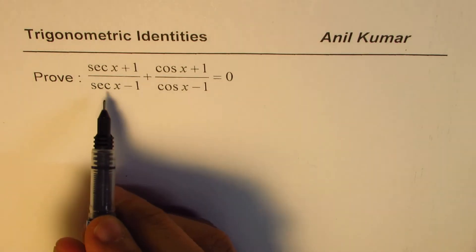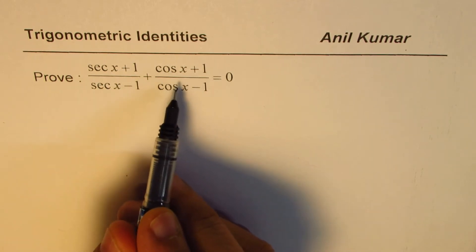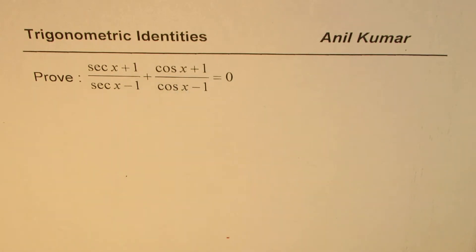Let's try to simplify the first term here and make it the negative of the second term. Only then will their combination or sum equal 0.